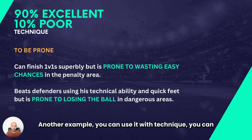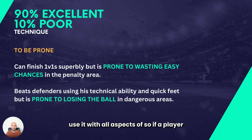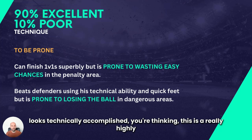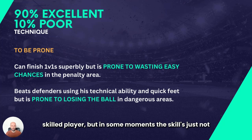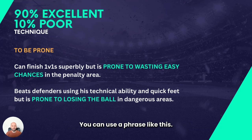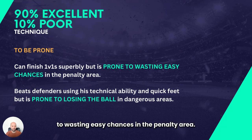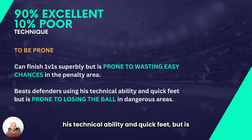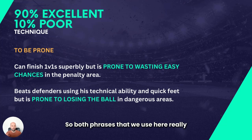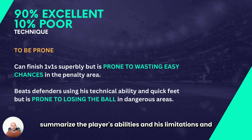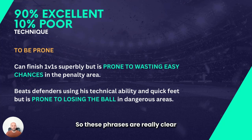You can also use it with technique and all other aspects. If a player looks technically accomplished but makes mistakes in some moments, for a winger you might say: 'Can finish 1v1 superbly, but is prone to wasting easy chances in the penalty area.' Another phrase: 'He beats defenders using his technical ability and quick feet, but is prone to losing the ball in dangerous areas.' Both phrases summarize the player's abilities and the limitations holding them back — clear and impactful.